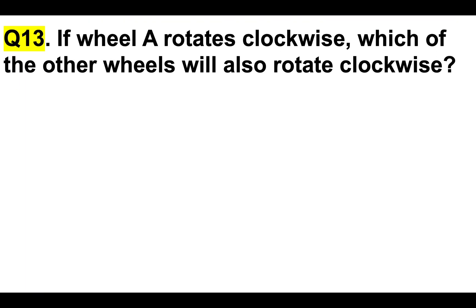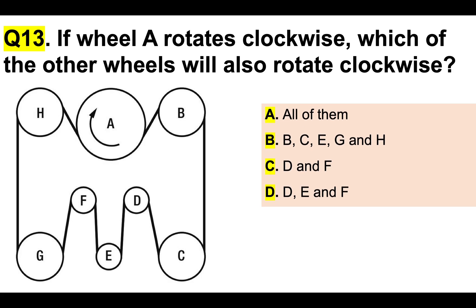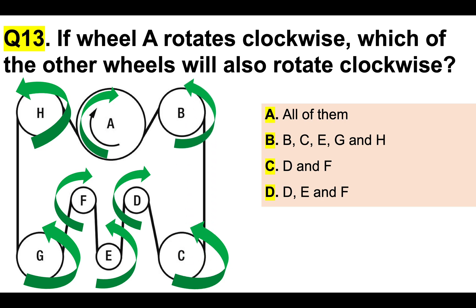Let's now make things a little bit harder. Question 13: if wheel A rotates clockwise, which of the other wheels will also rotate clockwise? Options are: A — all of them; B — B, E, G and H; C — D and F; or D — D, E and F. Working through in your mind: A clockwise, H goes counterclockwise, G counterclockwise, F clockwise, E anticlockwise, D clockwise, C counterclockwise, B anticlockwise. So D and F rotate clockwise — the correct answer is C. The more practice you do in your mind, the quicker you will get.